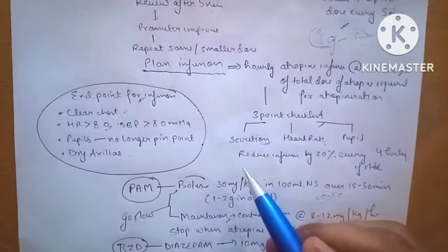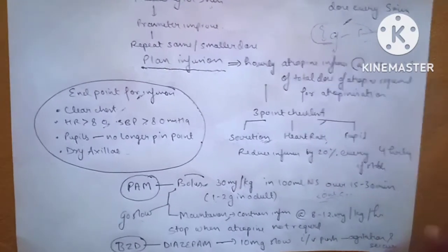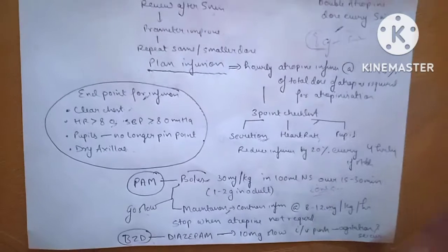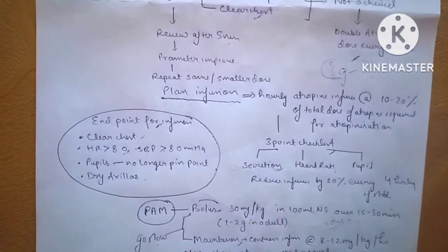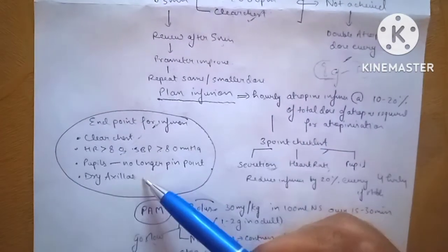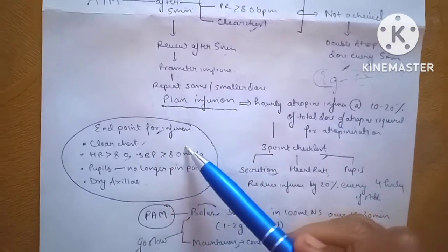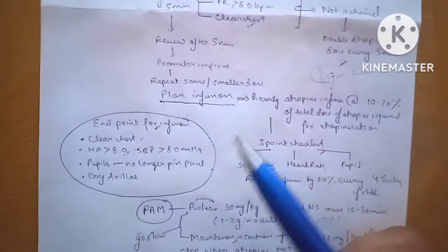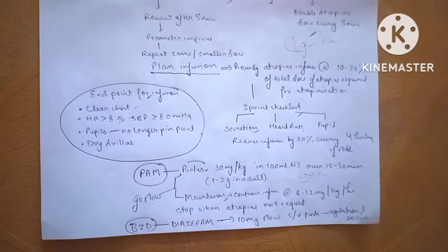We reduce the infusion by 20% every four hours if the patient is stable. Endpoints for infusion, that is when to stop the atropine infusion: we look for a clear chest, we look if the pupil is pinpoint, look for a dry axilla, aim for again the systolic BP of more than 80 and heart rate of more than 80. These parameters are endpoints for atropine infusion.